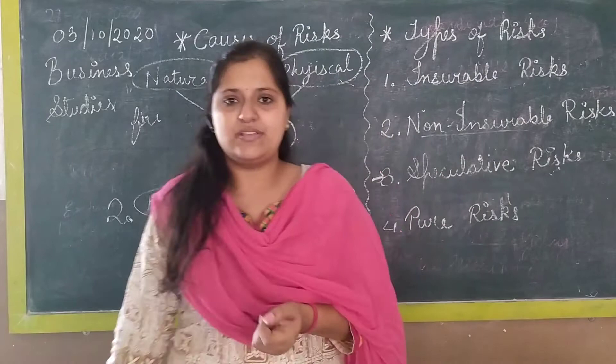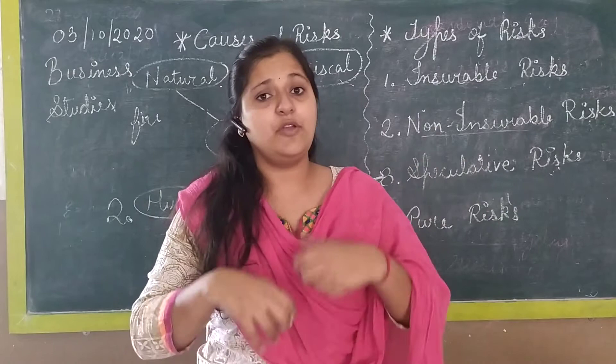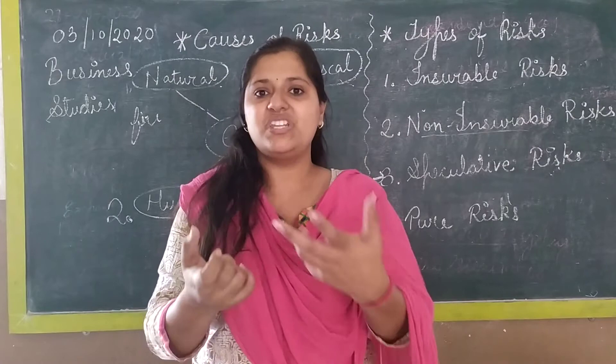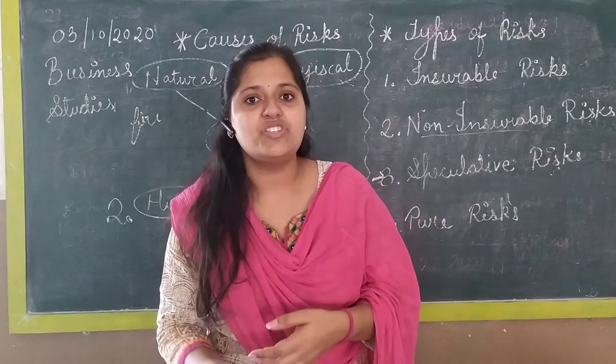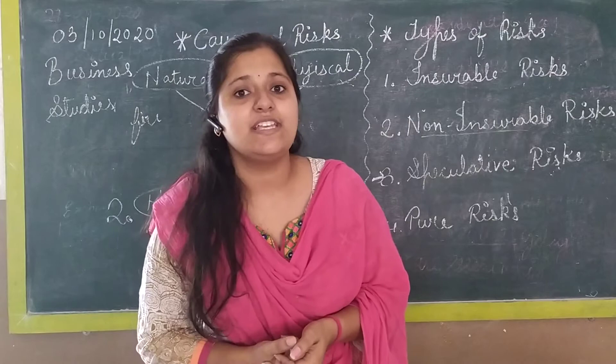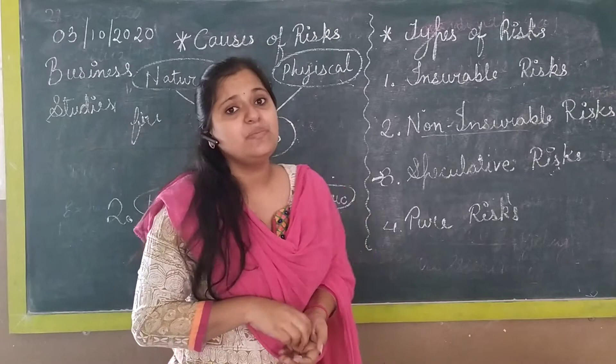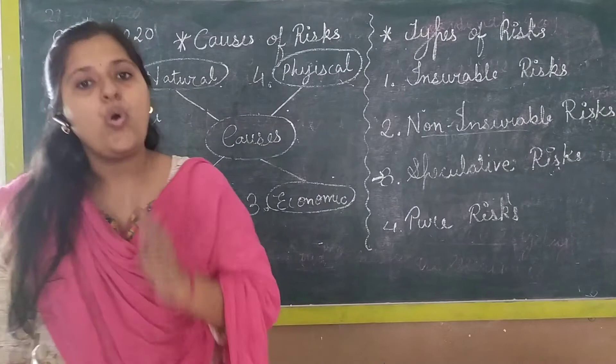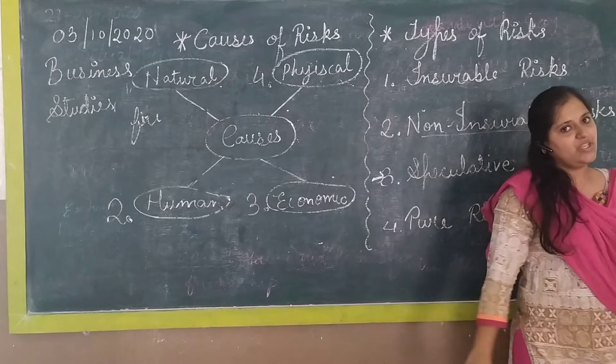The last cause is physical causes. This refers to the physical resources used in production — for example, machinery. If that machinery is damaged, whether due to an employee's mistake or an accident in the organization, there is also a loss to the organization. These are included in physical causes. So these are the four causes of risk to a business.